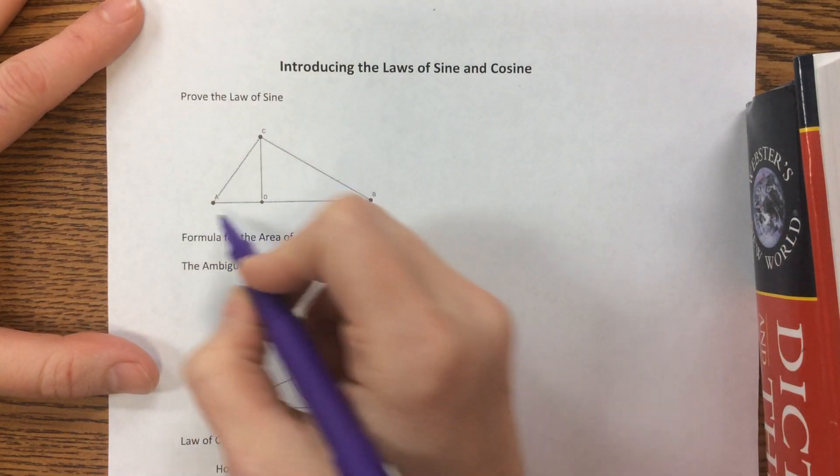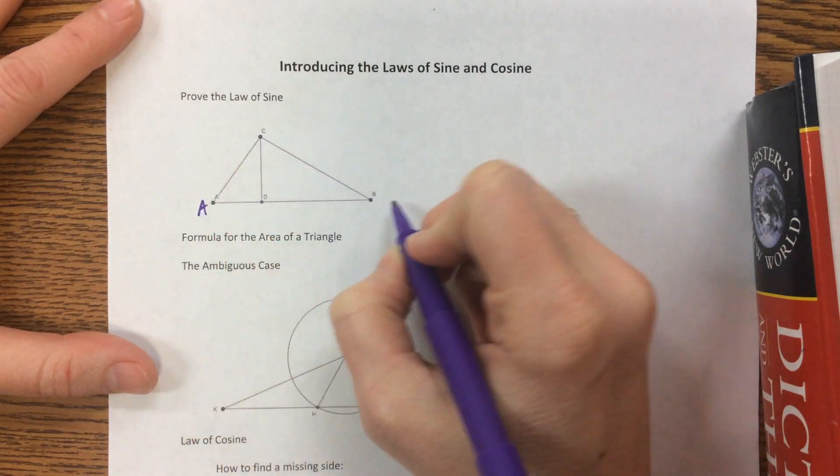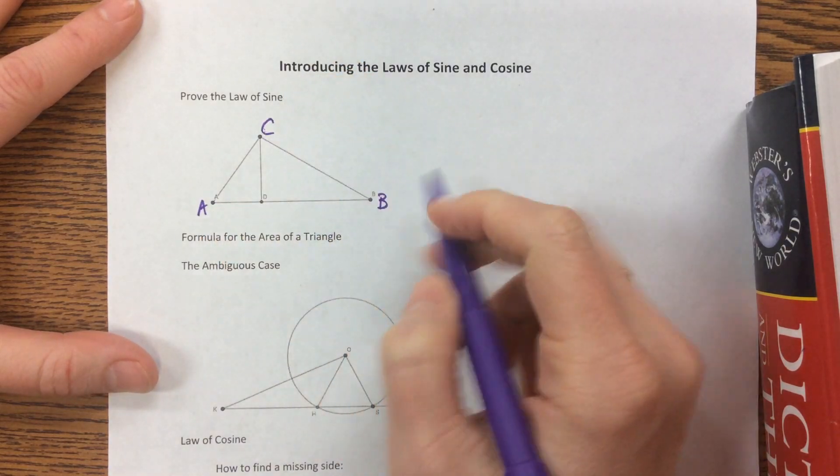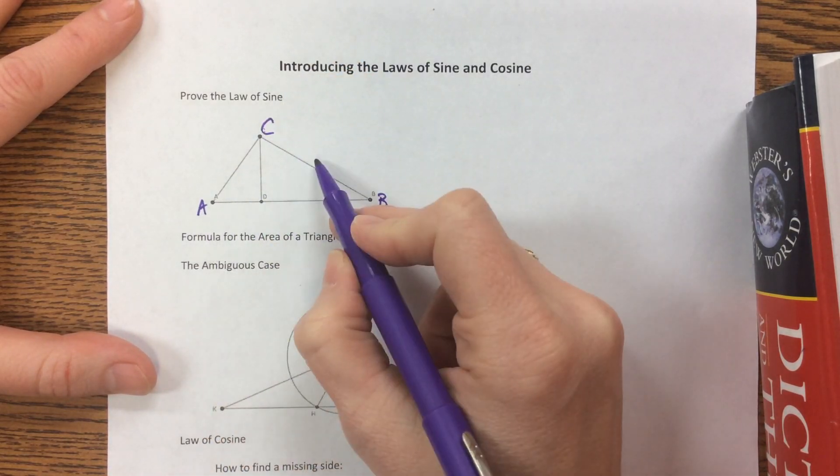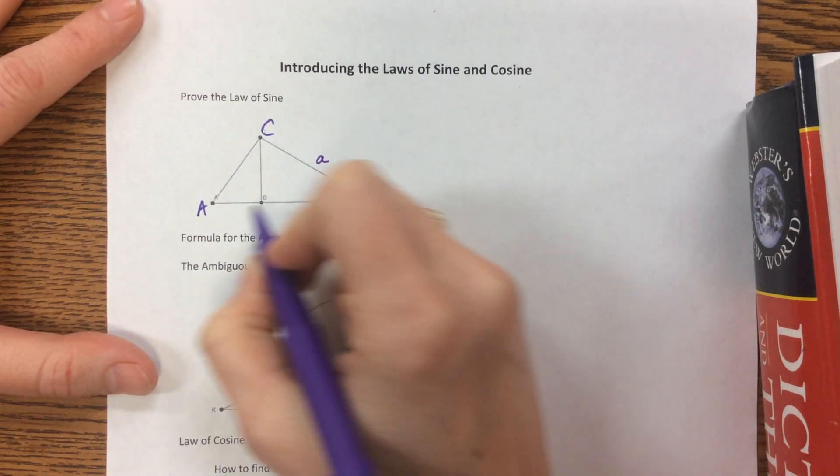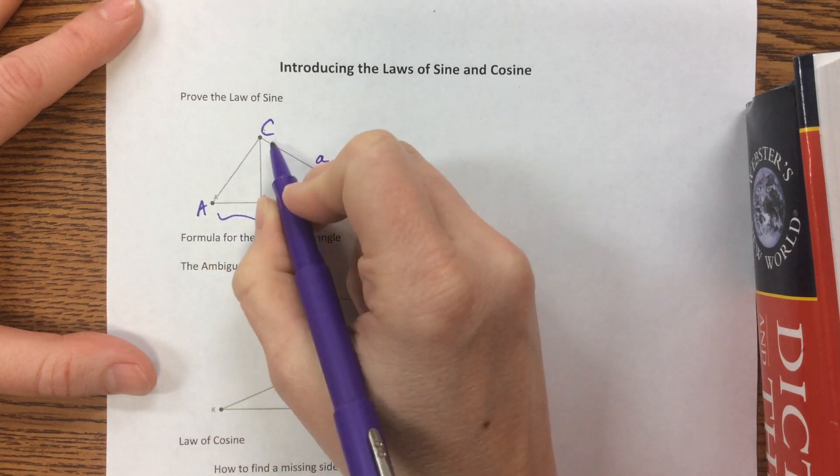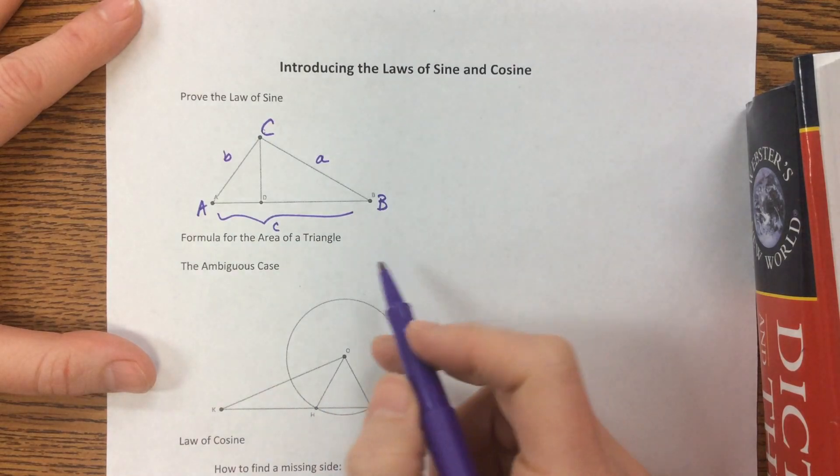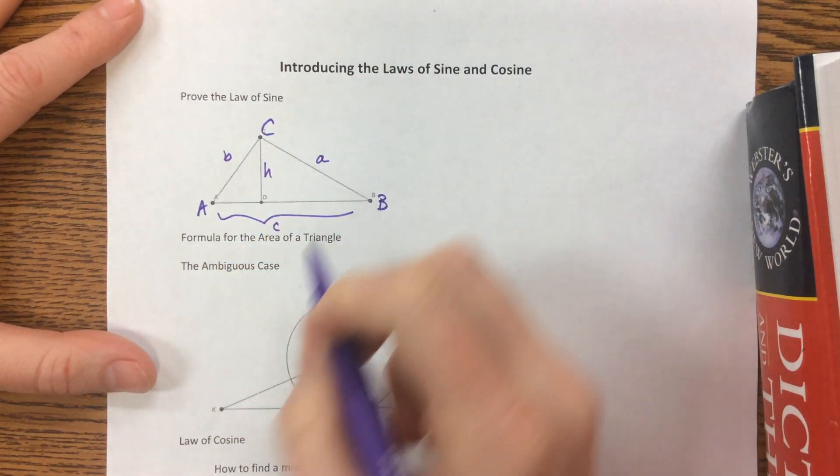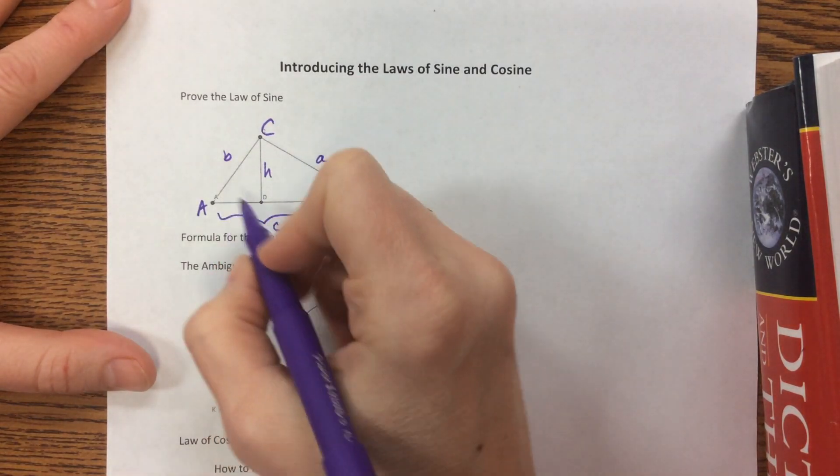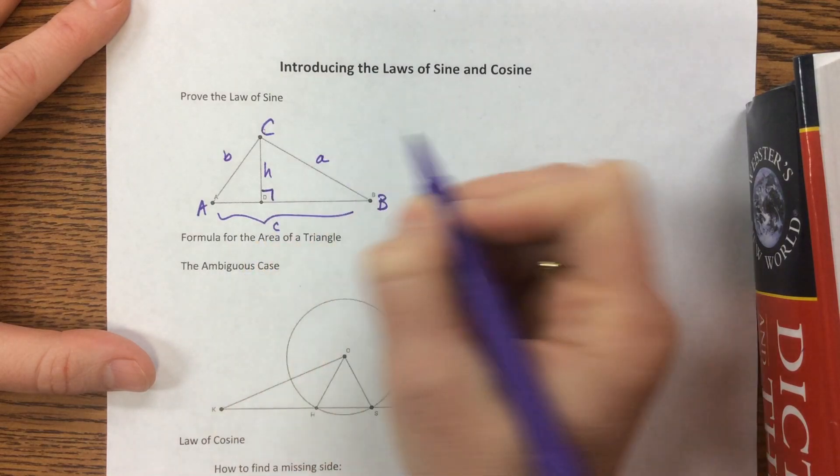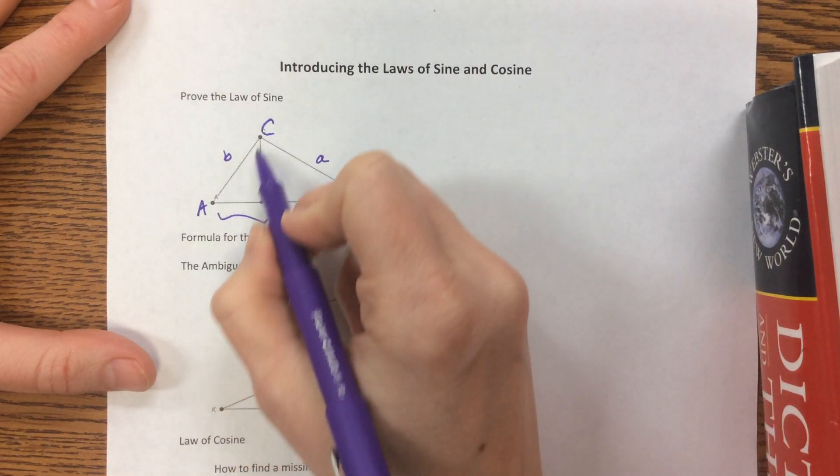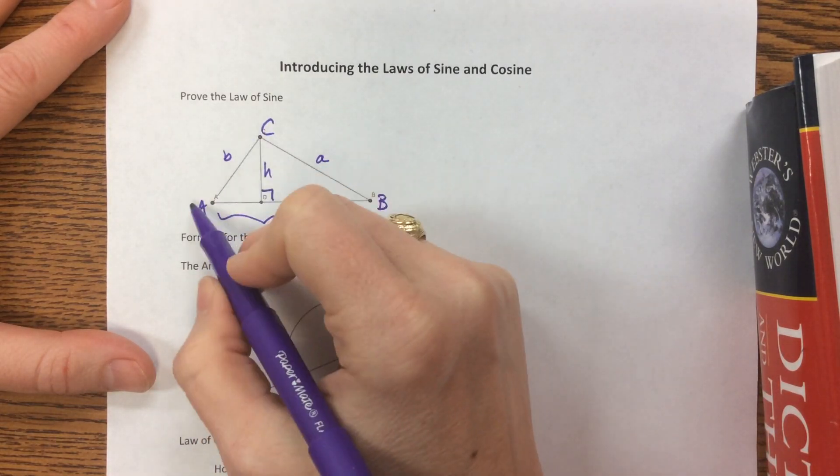As we begin here, I've got this triangle ABC, and you'll remember that across from the A, we call that side little a. Across from the big C is little c, across from the B is b right here. We're going to let this be the height of that triangle, and since that's the height, it makes a nice little right angle here, and I've got two separate triangles.